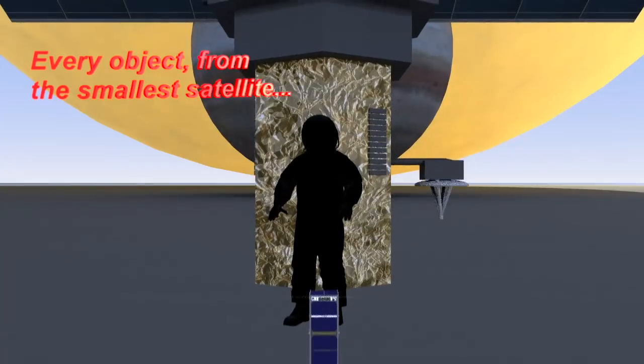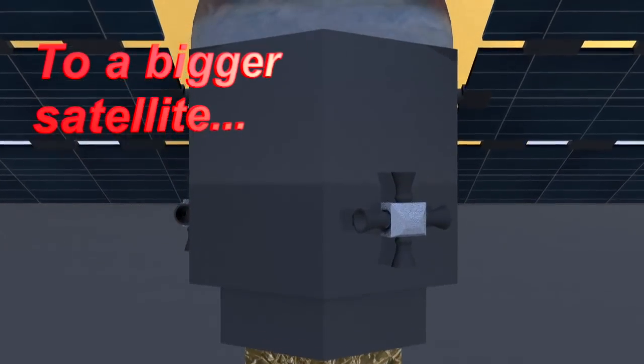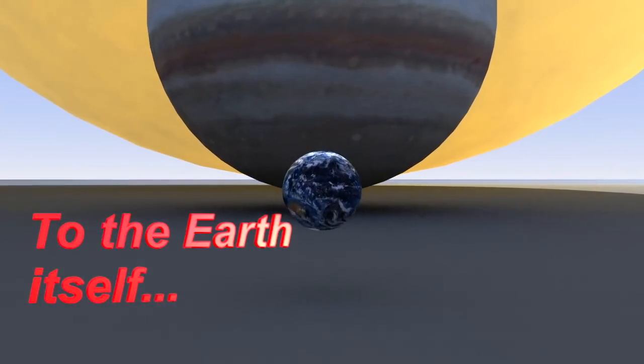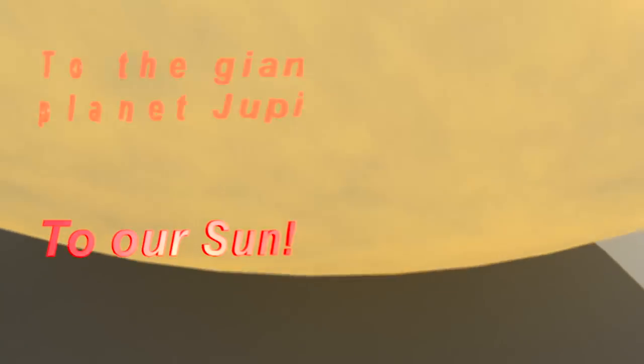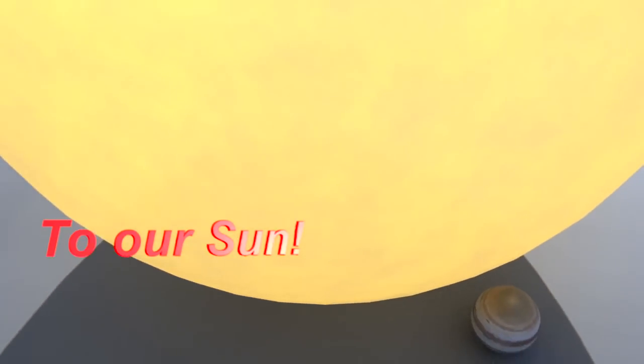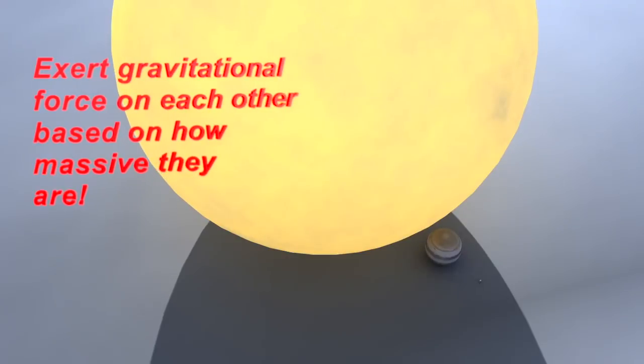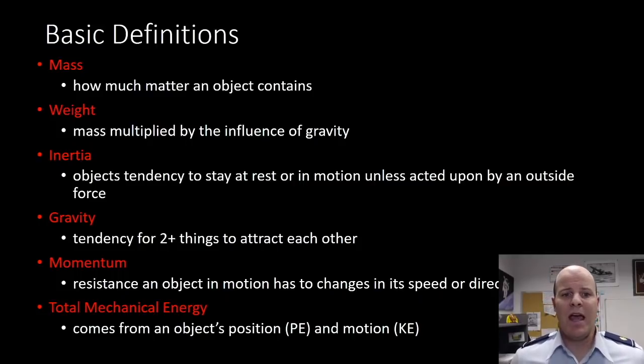Every object from the smallest satellite to a human, to a bigger satellite, to the Earth itself, to the giant planet Jupiter, to our Sun, exert gravitational force on each other based on how massive it is. Momentum is going to be the resistance of an object in motion to changes in its speed or direction of motion. So the more momentum an object has, the more difficult it is for that object to change its speed or direction. And total mechanical energy is going to be related to how much essentially energy an object has related to its position and its motion.